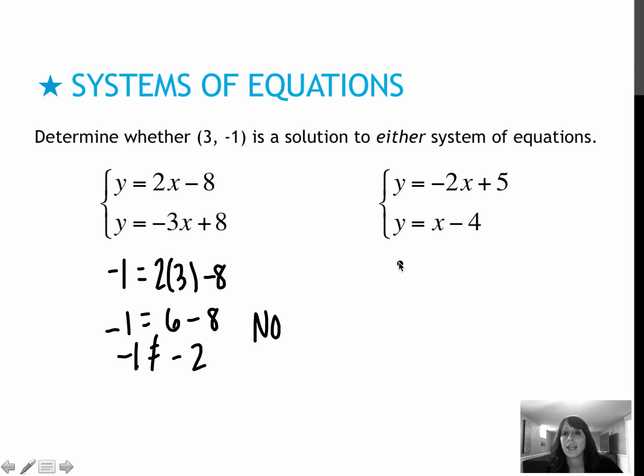For my second one, I get -1 equals -2 times 3 plus 5, which gives me -6 plus 5, which gives me a true statement for my first equation. Now I have to check the second equation.